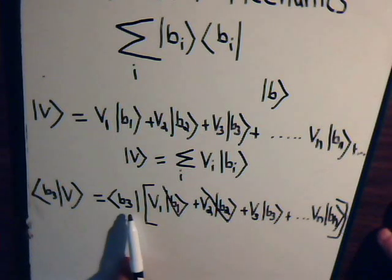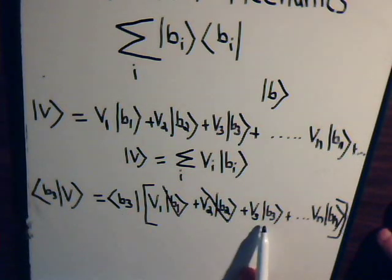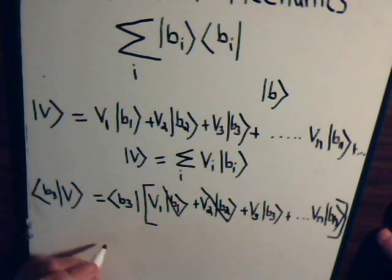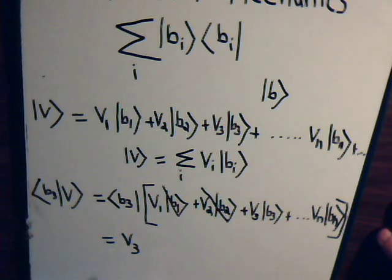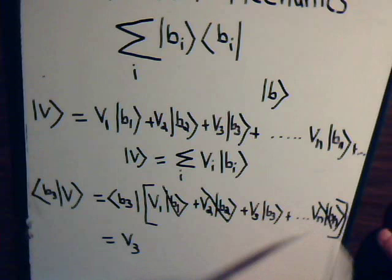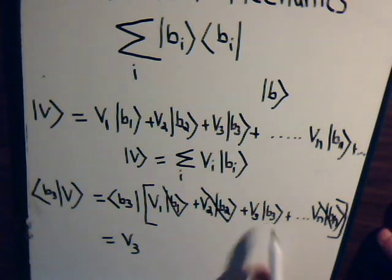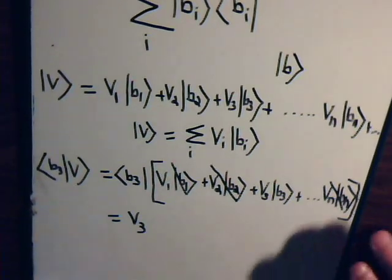Take the inner product of b3 with b3, we get one times v3, so so far this equals v3. And then the rest of them will obviously also be zero because they're not the basis vector b3. These are all orthonormal, so what we have here is this expression.